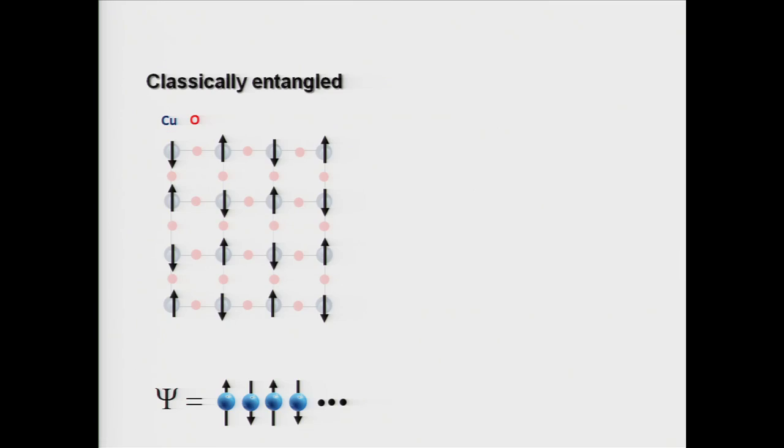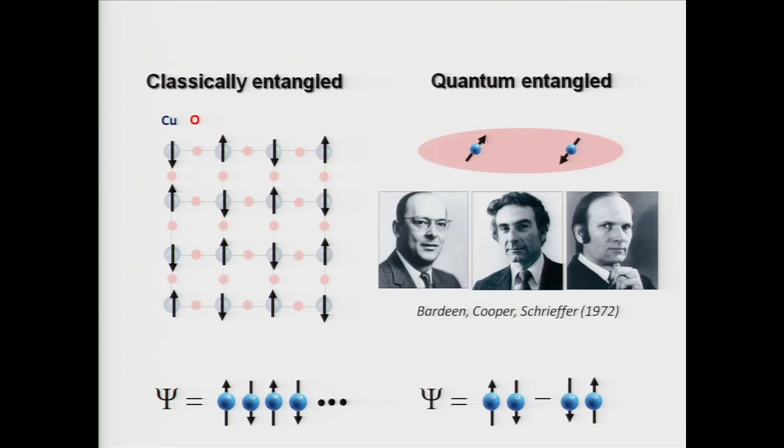And so if I go back to this anti-ferromagnetic insulator, this is an example of something that's classically entangled. The reality or my wave function is described by saying that the spin on this ion points up, this one points down, and up and so forth and so forth. In the Cooper pair that exists in the superconductor on the other hand, the two spins are quantum entangled. In other words, the reality is that they're simultaneously in a state where the left electron is up and the right electron is down, and where the left electron is down and the right electron is up. This is a very, very strange phenomenon. But it dates back to a theory by Bardeen, Cooper, and Schrieffer, who were awarded the Nobel Prize for explaining this phenomenon.